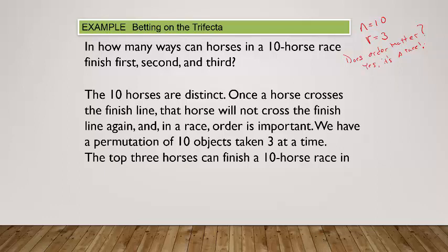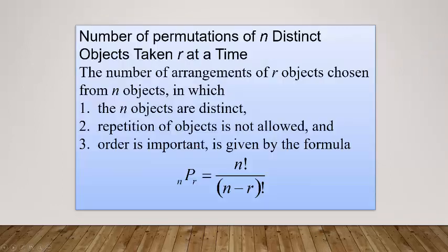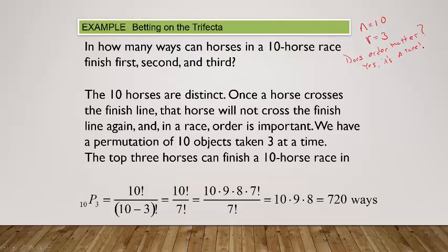The top three horses can finish in 10 pick 3 arrangements. Going back to the formula, that's n factorial, so 10 factorial, divided by (n minus r) factorial — and 10 minus 3 is 7. So it's 10 factorial divided by 7 factorial.